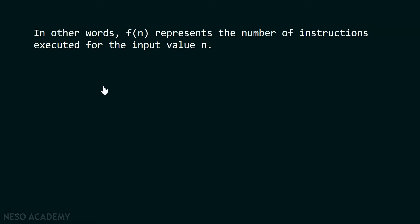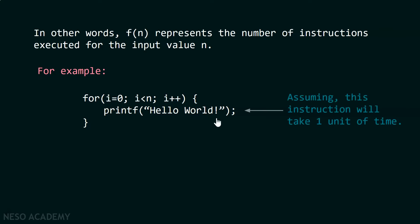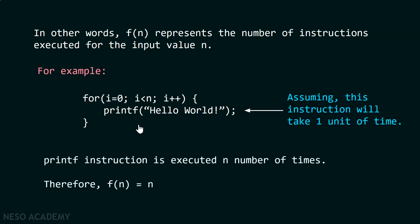Let's consider an example to understand this. Here I have a printf function within a loop which runs from 0 to n minus 1. Let's say this instruction takes one unit of time. We are executing this instruction n number of times, so f(n) will be equal to n. f(n) keeps the count of the number of instructions executed for input value n, and this gives us the time complexity.